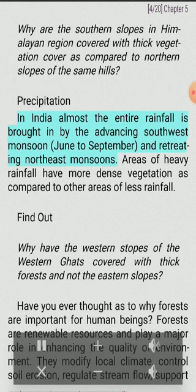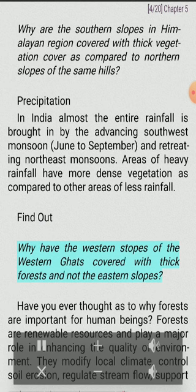Precipitation: In India, almost the entire rainfall is brought by the advancing southwest monsoon (June to September) and retreating northeast monsoons. Areas of heavy rainfall have more dense vegetation as compared to other areas of less rainfall. Find out: why have the western slopes of the Western Ghats covered with thick forests and not the eastern slopes?